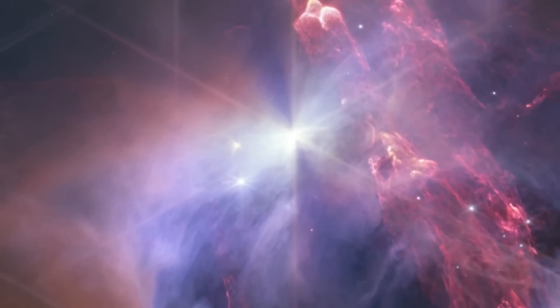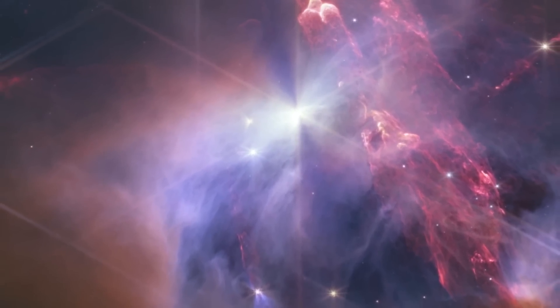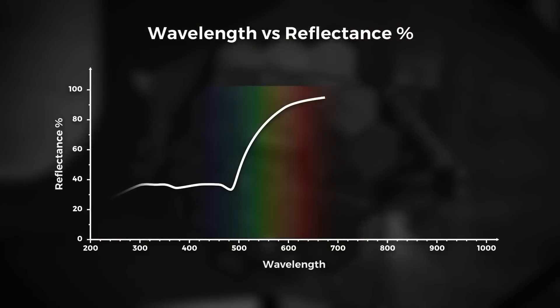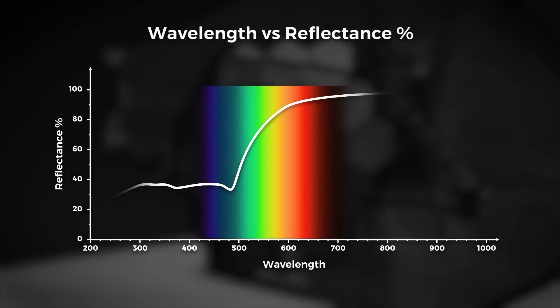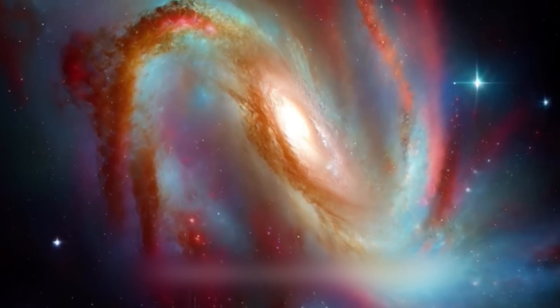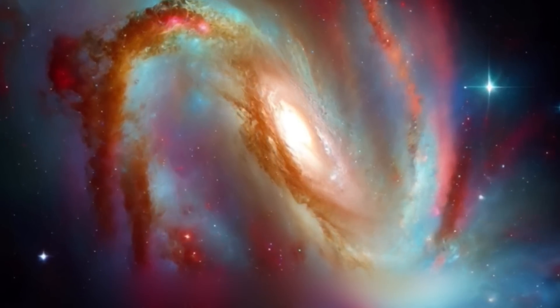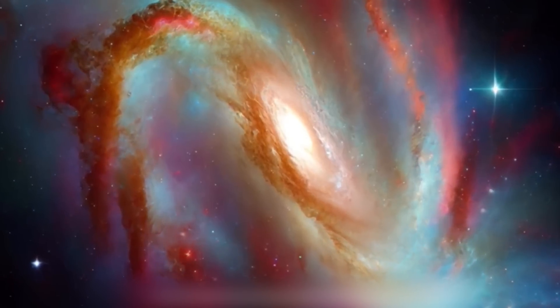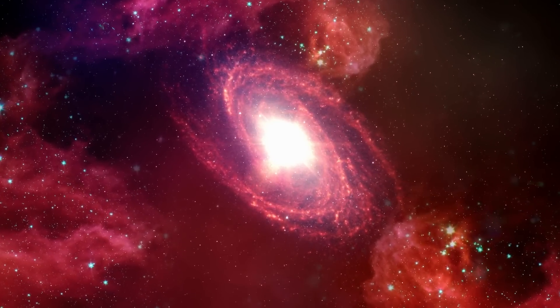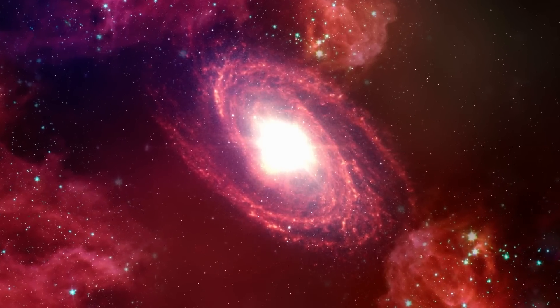Having unraveled the dramatic origins of ARP-220 and its subsequent transformation into a prolific star-forming factory, we now turn our gaze to one of its most distinctive traits, its radiant display in the infrared spectrum. A showcase of celestial luminescence, ARP-220 truly earns its classification as an ultra-luminous infrared galaxy, ULIRG. But why does ARP-220 glow so brightly in the infrared? The answer lies in its unique structure and composition.